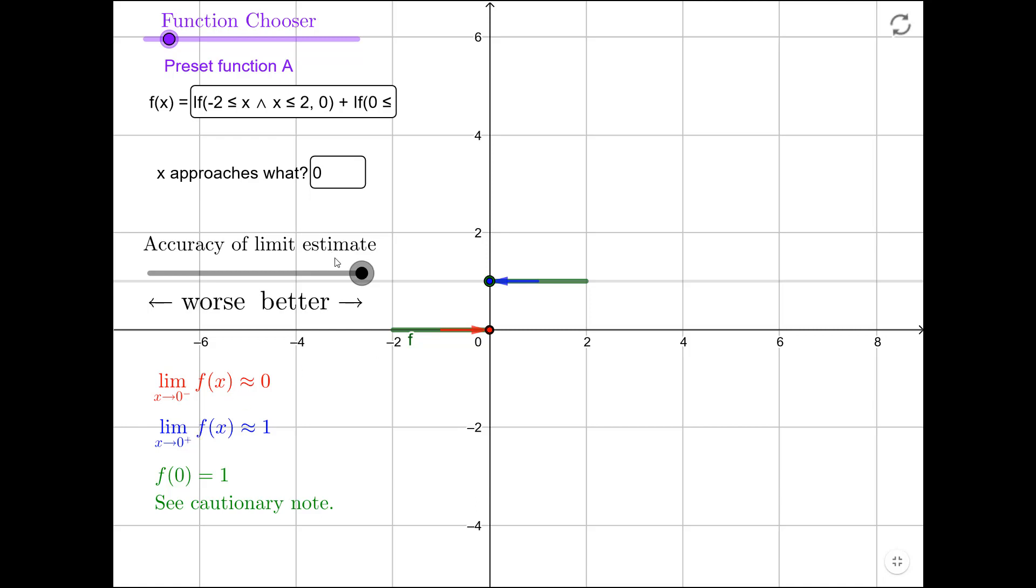We might also be interested in the behavior of this function at a different x value. For example, if I were to ask what is this function doing as x approaches 1, I'd put a 1 here in the x approaches what box. And now we'll play with this accuracy of limit estimate. And here it looks like the left and right limits are both convergent to the same point. So the limit from the left is approximately 1, the limit from the right is approximately 1.